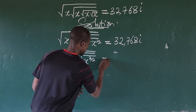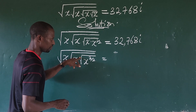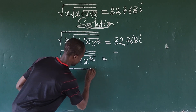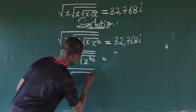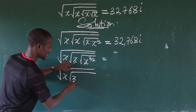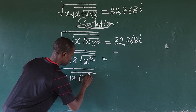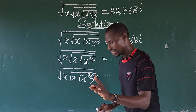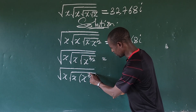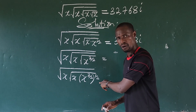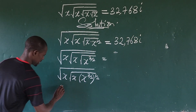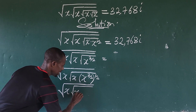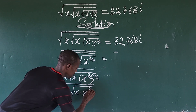Now I want to remove the next radical layer. If we raise X to the power of 3 over 2 to the power of 1 over 2, according to the law of indices we multiply the exponents: 3 over 2 times 1 over 2 gives us 3 over 4. So we now have X into the square root of X times X to the power of 3 over 4.